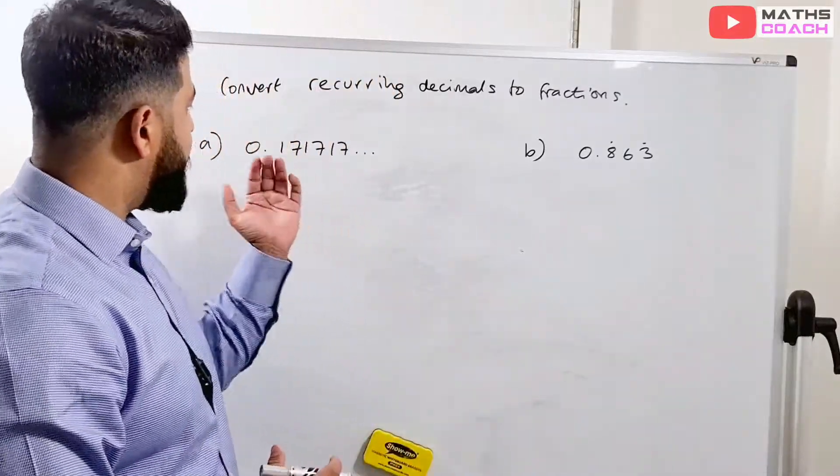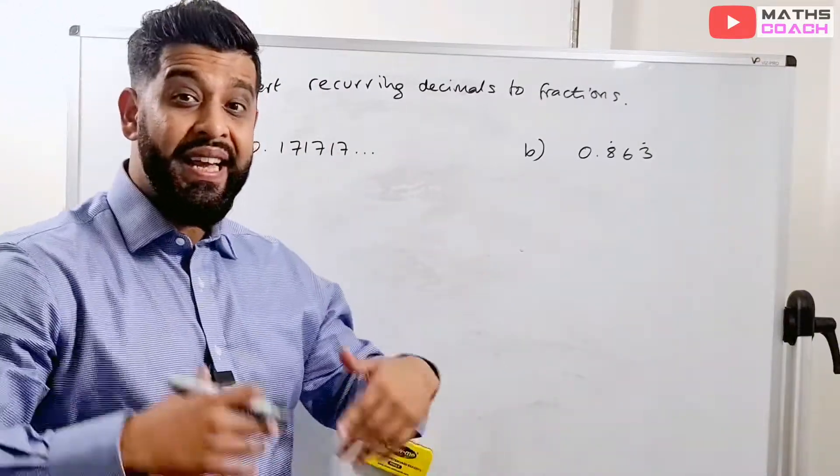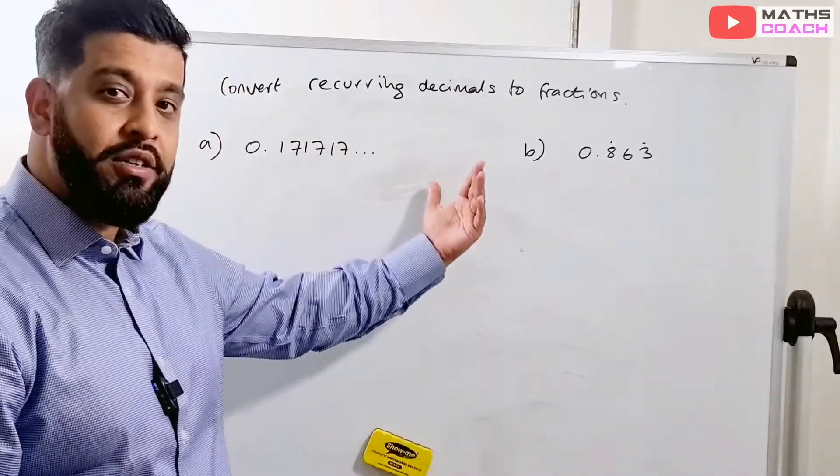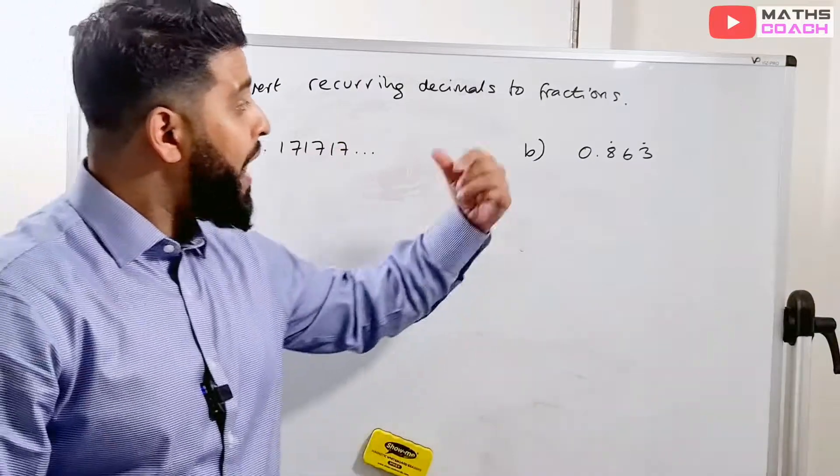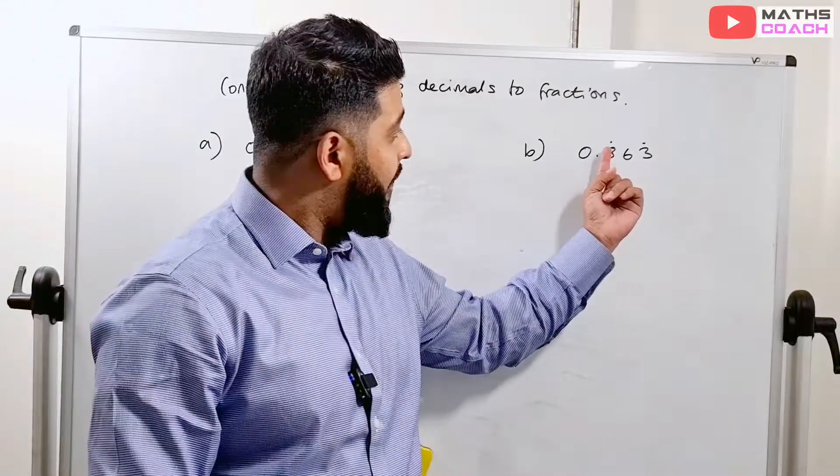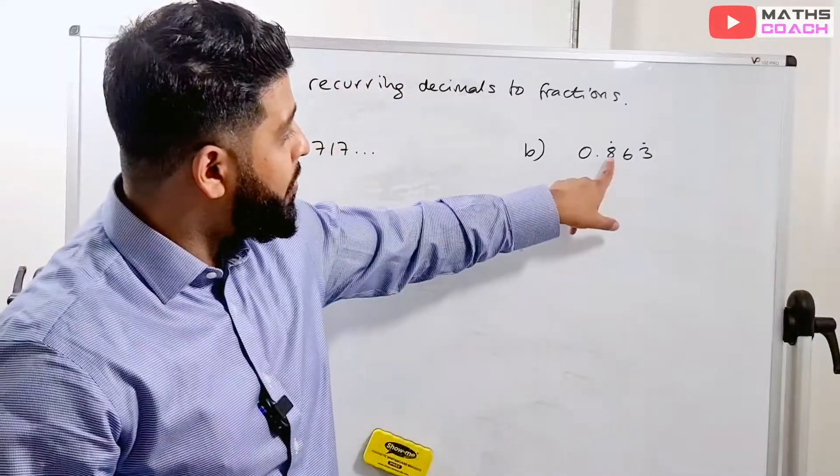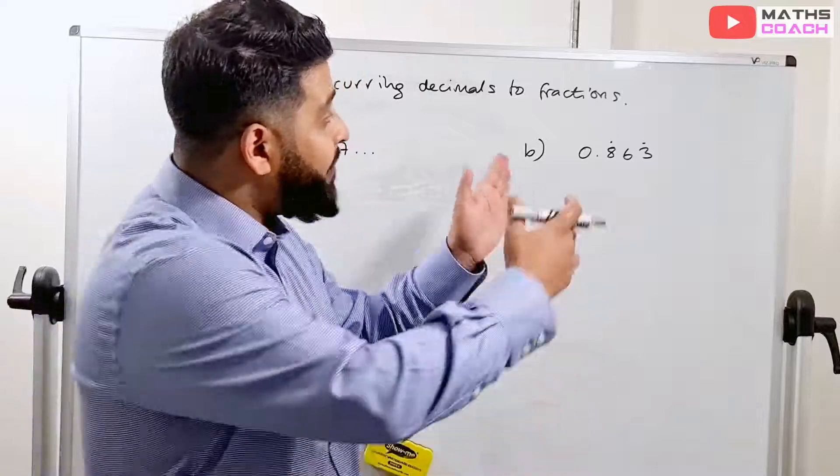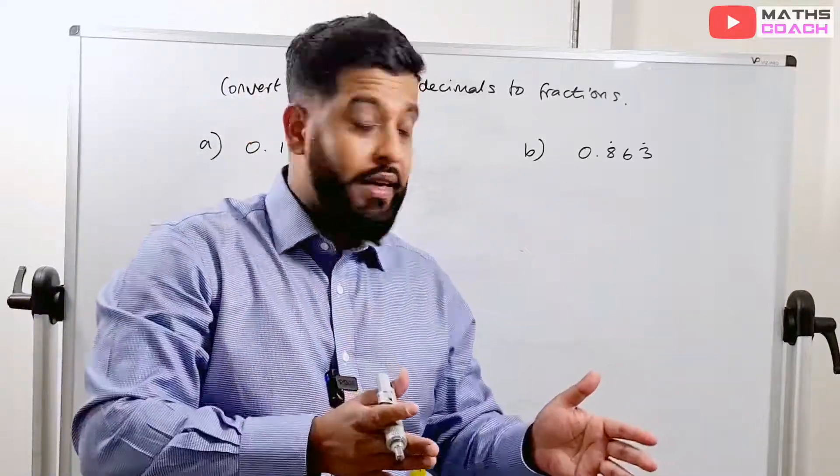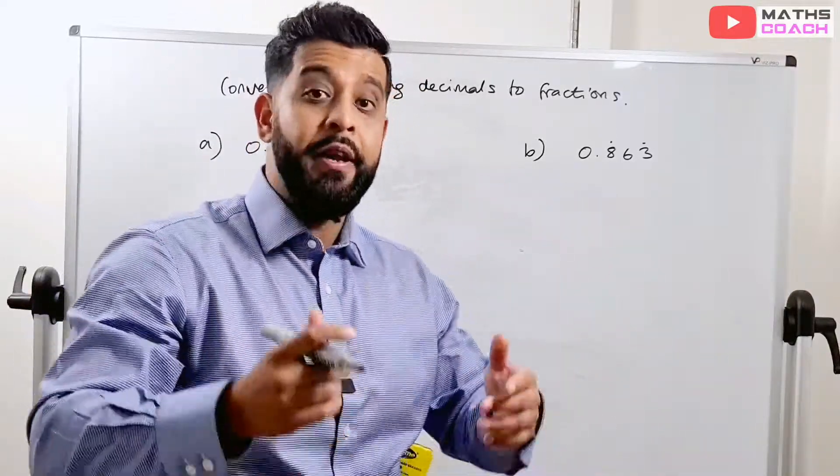So sometimes the decimal will be written like this with three dots at the end, indicating that this continues, this pattern of numbers continues.